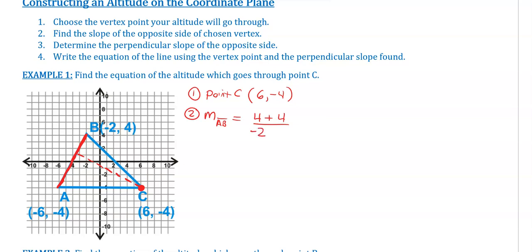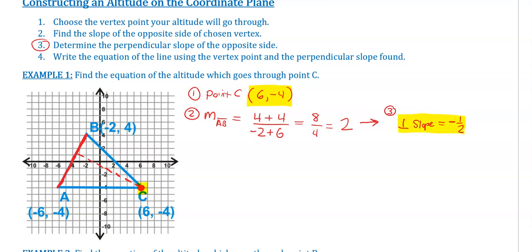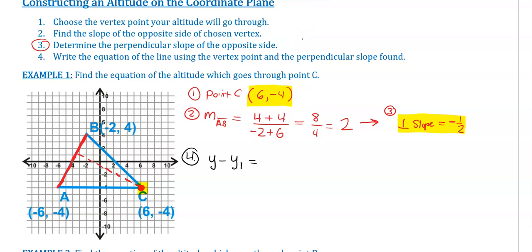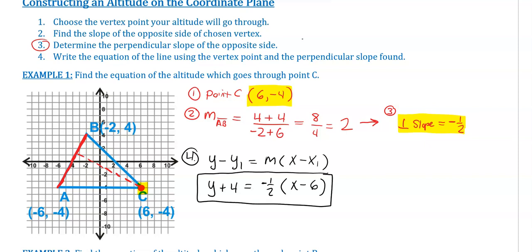Using the slope formula: y2 minus y1 — it's a negative, so it becomes a plus — and x2 which is −2, minus x1, which is another plus. So I get 8 over 4, which means the slope of segment AB is 2. However, step 3 is to determine the perpendicular slope, which is negative 1/2. For step 4, creating the equation of the line — it goes through point (6, −4) with slope −1/2. Using point-slope form: y + 4 = −1/2(x − 6). This is the equation of that dotted altitude line.